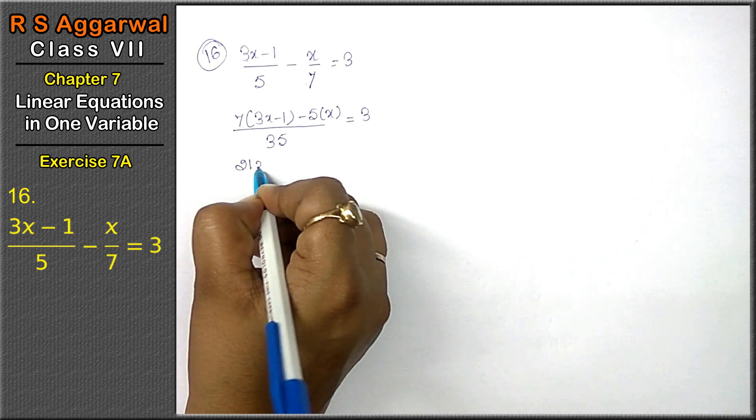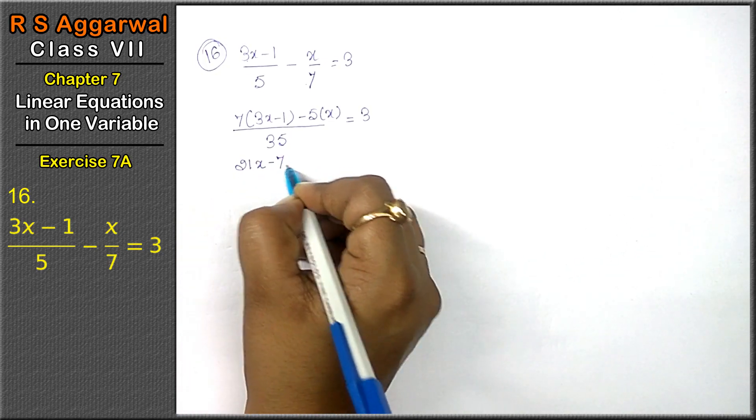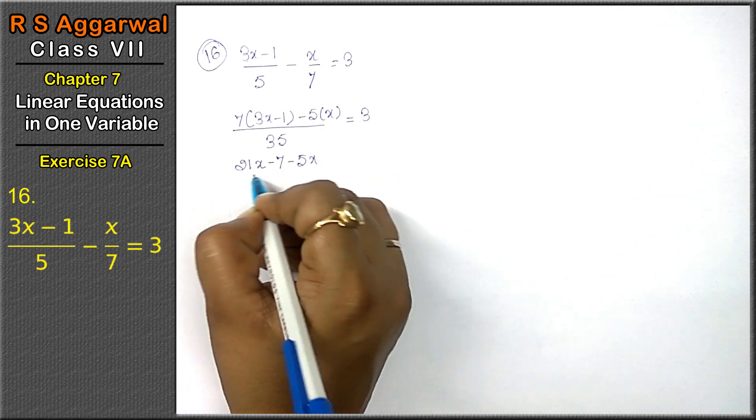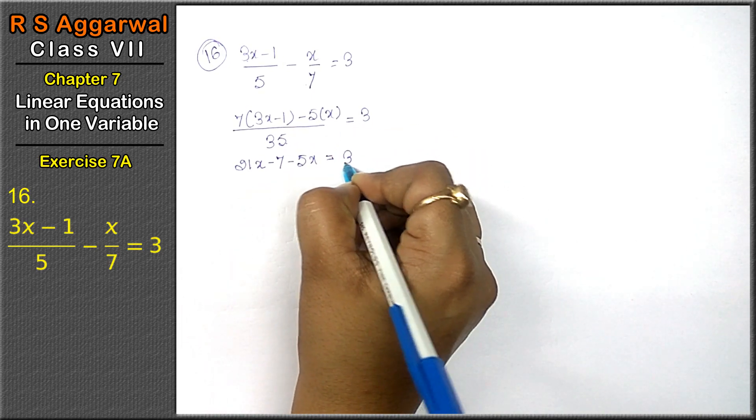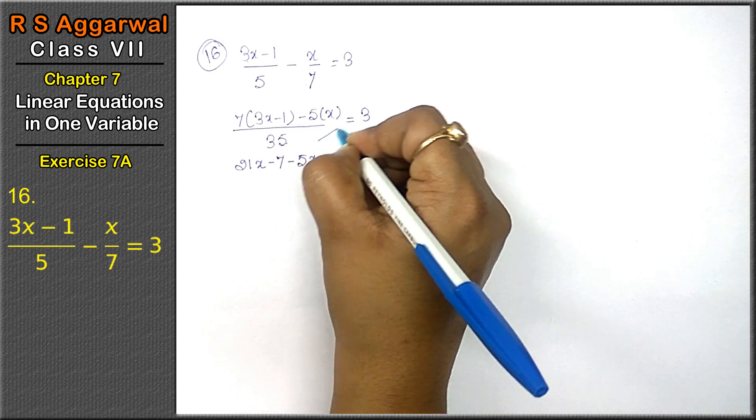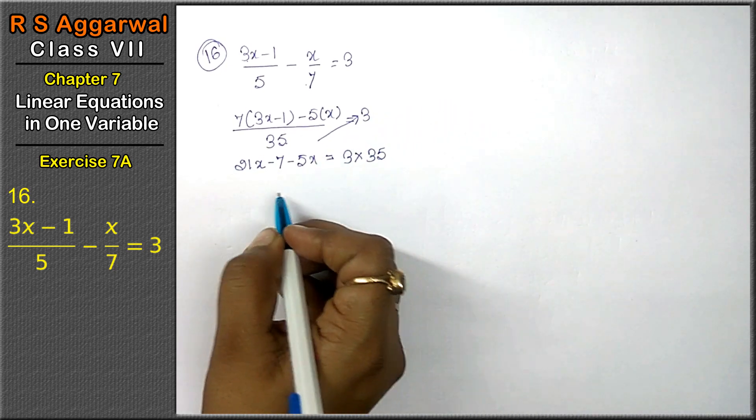Now, 7, 3 is 21x minus 7 is 7 minus 5x. This will be divided here and multiply. 3 into 35. This will be divided here and multiply.